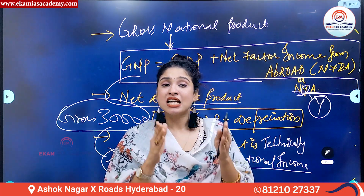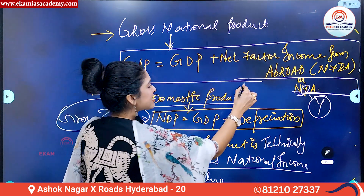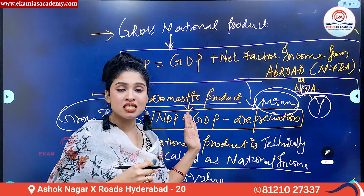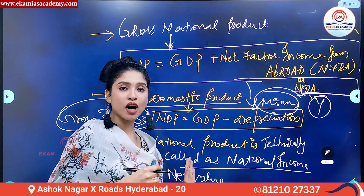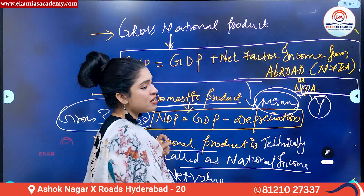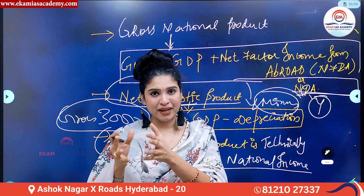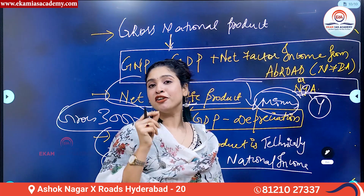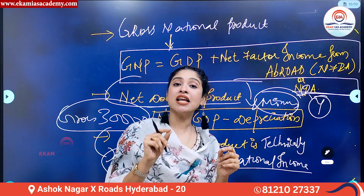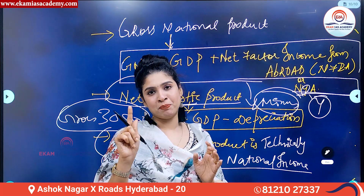Similarly, when we study net domestic product or net national product, something is being subtracted from the gross domestic or gross national product to arrive at the net value. Net domestic product is defined as the total value of all final goods and services produced in a country minus depreciation.